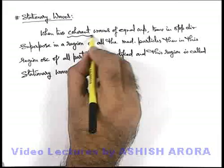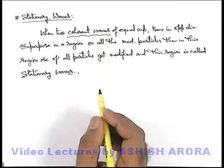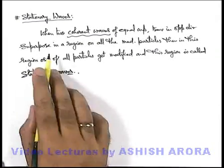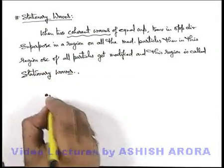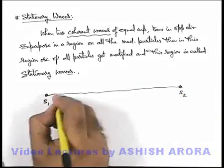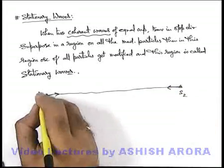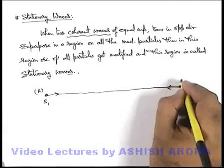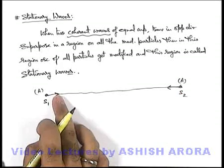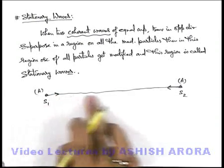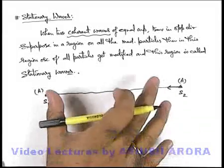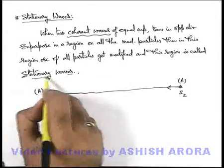As we know, when 2 coherent waves superpose on a medium particle, the phenomenon of interference takes place at that particle. In this situation, when 2 waves are travelling in opposite directions — if there is source S1 and source S2 sending out waves in opposite directions, both of equal amplitude A — then on all the medium particles these waves will superpose, and simultaneous interference will take place on all the medium particles. The modified oscillations of all the medium particles in this region we term as stationary waves.